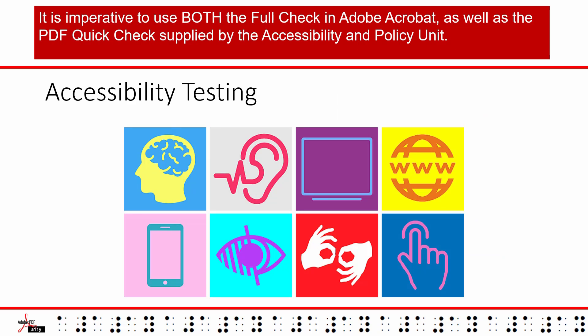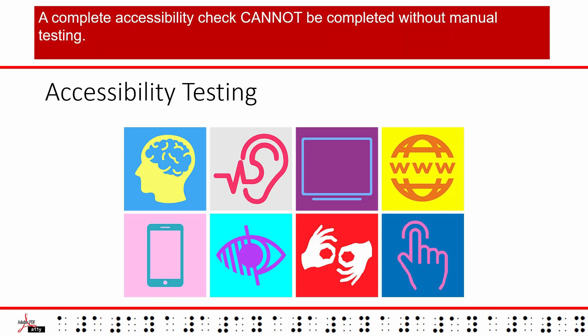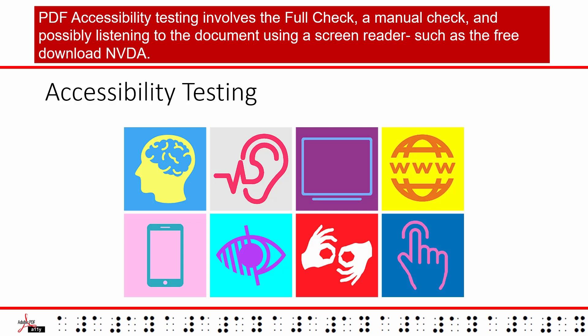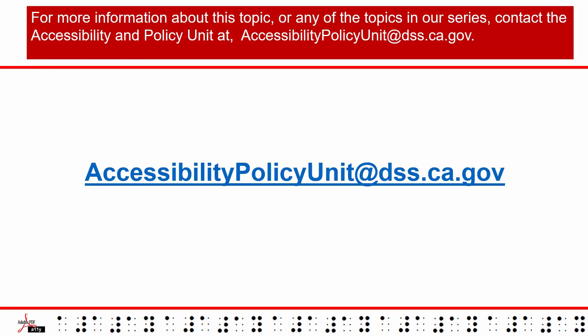It is imperative to use both the Full Check in Adobe Acrobat as well as the PDF Quick Check supplied by the Accessibility and Policy Unit. A complete accessibility check cannot be completed without manual testing. PDF accessibility testing involves the full check, a manual check, and possibly listening to the document using a screen reader, such as the free download NVDA. For more information about this topic or any of the topics in our series, contact the Accessibility Policy Unit at accessibilitypolicyunit@dss.ca.gov.